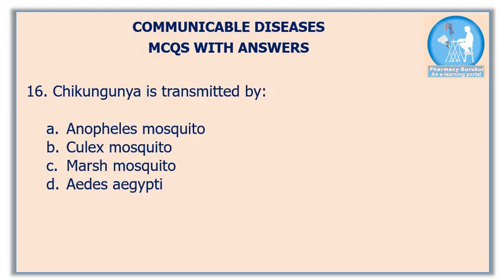The correct answer is option B: viral. Sixteenth question: Chikungunya is transmitted by — the correct answer is option D: Aedes aegypti mosquito. Please note there is another vector carrying the Chikungunya virus known as Aedes albopictus, meaning there are two types of mosquitoes that carry the Chikungunya virus: Aedes aegypti and Aedes albopictus.